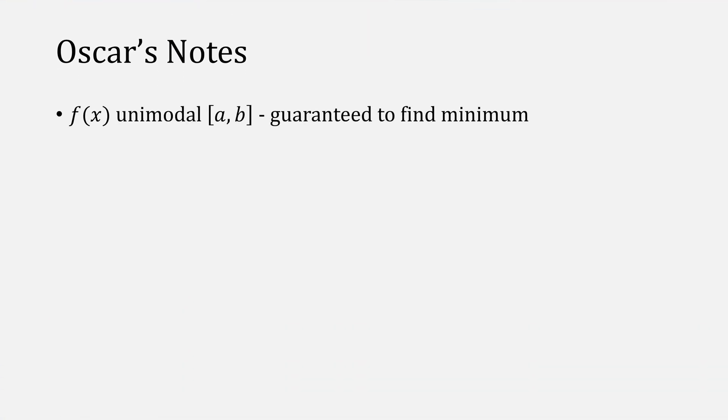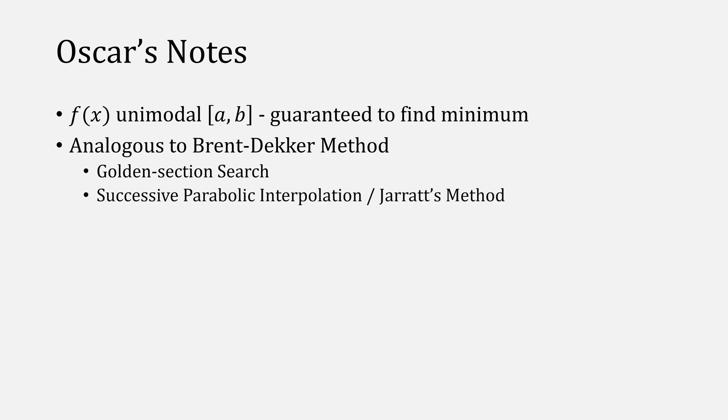Importantly, Brent's method is guaranteed to find your minimum assuming you have a valid interval. It's analogous to the Brent-Dekker method for finding roots, combining golden section search with successive parabolic interpolation, also known as Girard's method.